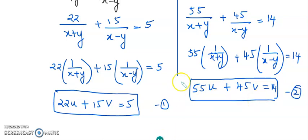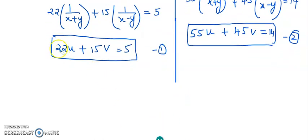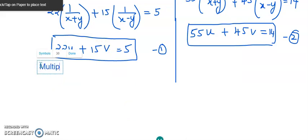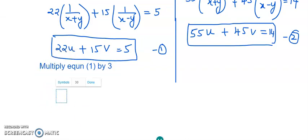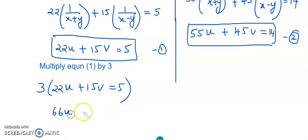Can we take variable v and try to make the coefficients equal? Let us check: we have 15v and 45v — 45 is in the 15 times table, by multiplying by 3. So we will work on the first equation and take the variable v. We multiply equation 1 by 3: 3 times (22u plus 15v equals 5), which gives 66u plus 45v equals 15.